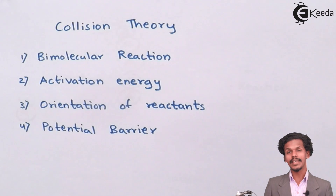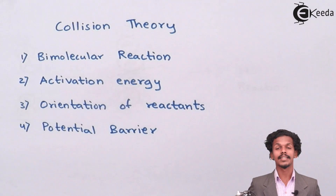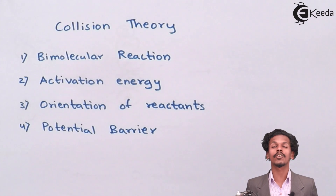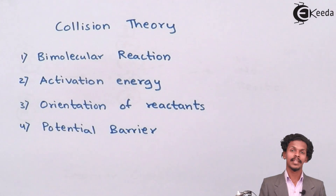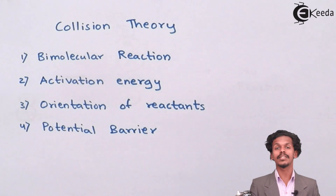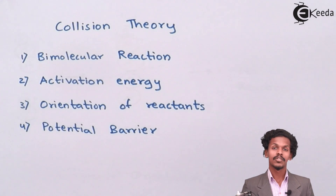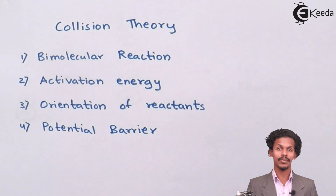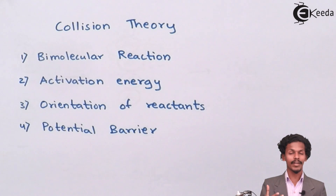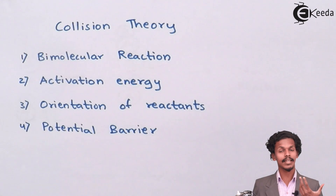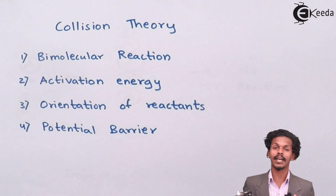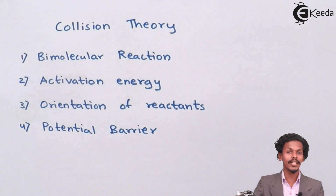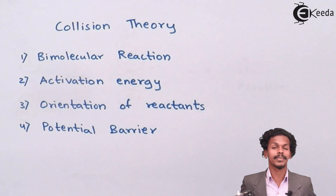Collision theory says that when two molecules combine with each other, they collide, and unless they collide, the product will not be formed. This collision theory is for bimolecular reactions only, and not for trimolecular reactions, because trimolecular reactions are very rare in nature.